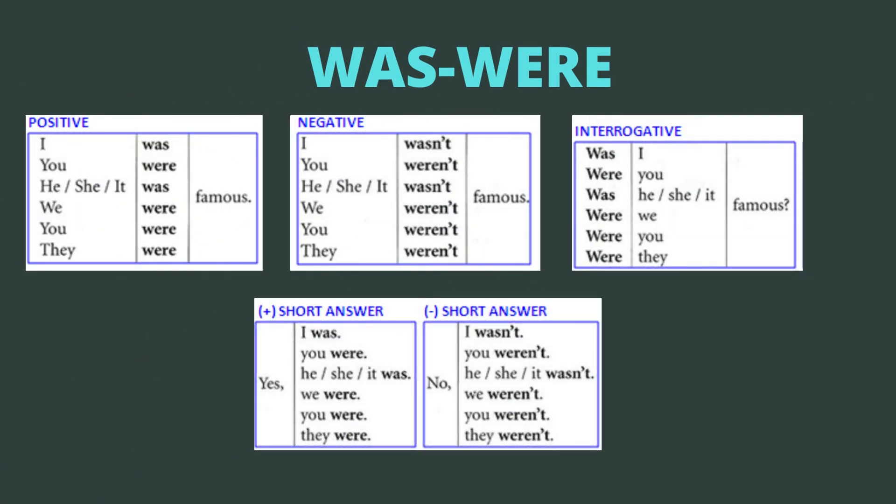Now, here we have some charts about was and were. Aquí tenemos unos cuadros con el uso de was and were. So, the first that we have here is positive. Was and were is the past of the verb to be. You have to pay attention to the pronouns: I, you, he, she, it, we, you, and they. So, we use I was, you were, he/she/it was, we were, you were, and they were, followed by an adjective as complement.